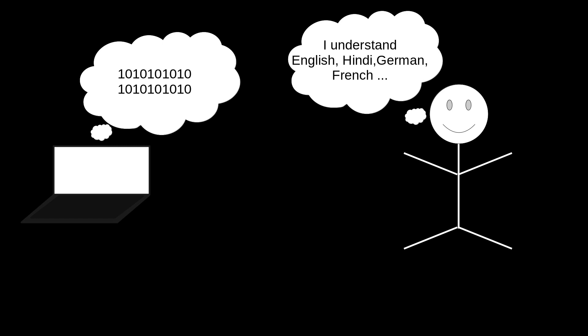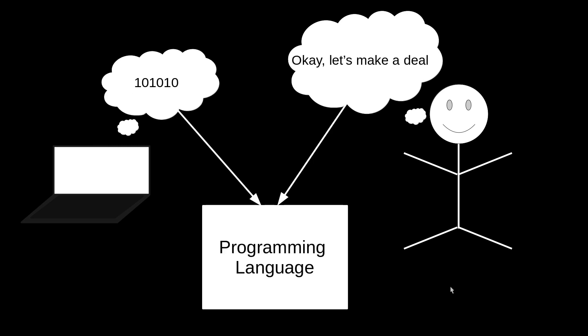How to solve this problem? This problem was actually solved many years ago by a group of programmers who said: let's come to the middle ground — why not both interact in a unified kind of language, which is nothing but a programming language. They made a deal, and both agreed. The computer can understand your language now, and that language was nothing but the programming language which both of them understand very easily.